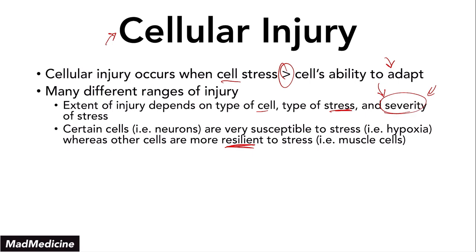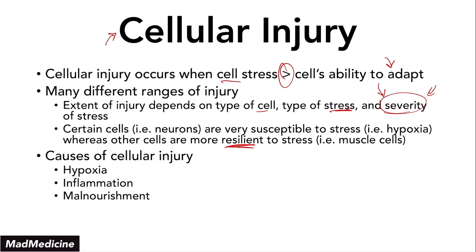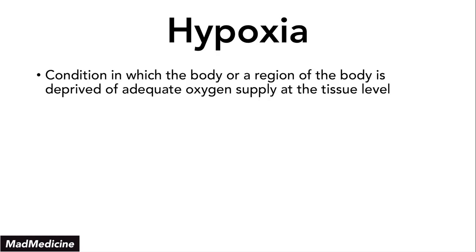There are different causes of cellular injury you need to be aware of: hypoxia, inflammation, malnourishment, genetic mutation, and trauma. We'll discuss the rest in subsequent lectures. Right now we're focusing on hypoxia. Hypoxia is a condition in which our body or a region of our body is deprived of adequate oxygen supply, especially at the tissue level — that's very important.